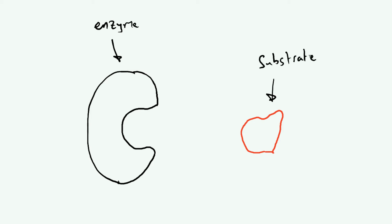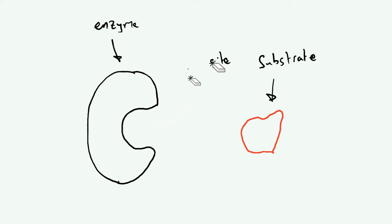The substance involved in the reaction that the enzyme speeds up is called the substrate — you can think of it as the reactant in chemistry. Now, the enzyme has a specific shape, and this part of your enzyme is called the active site. The active site is the most important part of your enzyme. It has a very specific shape, and that is where your substrate is going to fit. If the active site does not fit your substrate, then the enzyme is not going to work.